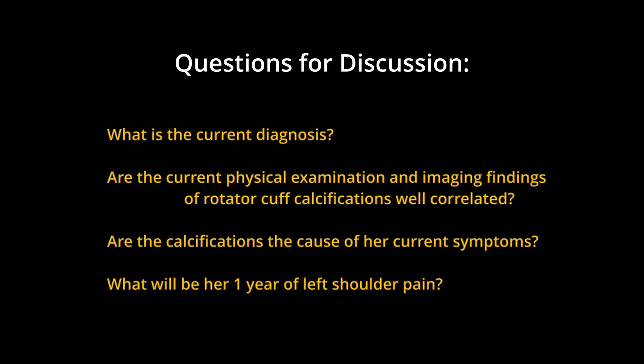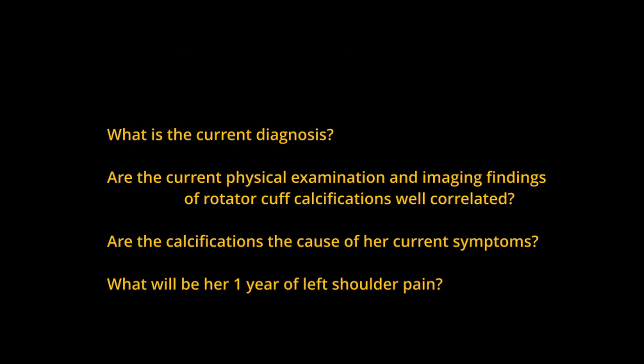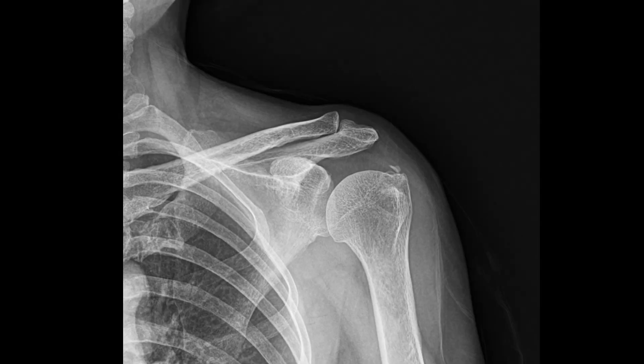Questions for discussion: What is the current diagnosis? Are the current physical examination and imaging findings of rotator cuff calcifications well correlated? Are the calcifications the cause of her current symptoms? What will be her one-year left shoulder pain outcome?